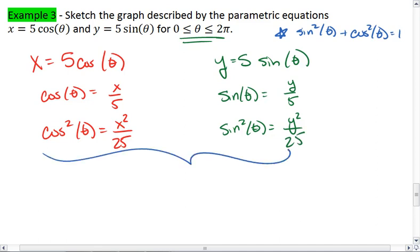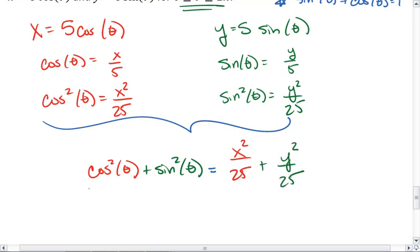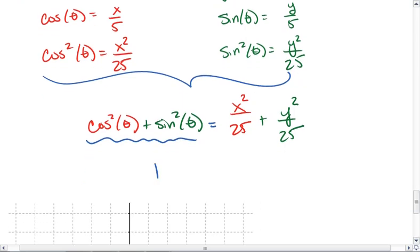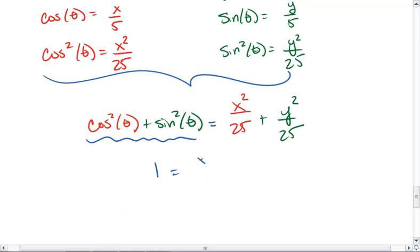Now, I'm going to add my equations. So I get cosine squared plus sine squared equals x squared over 25 plus y squared over 25. Cosine squared plus sine squared theta becomes 1. So I get 1 equals x squared over 25 plus y squared over 25.